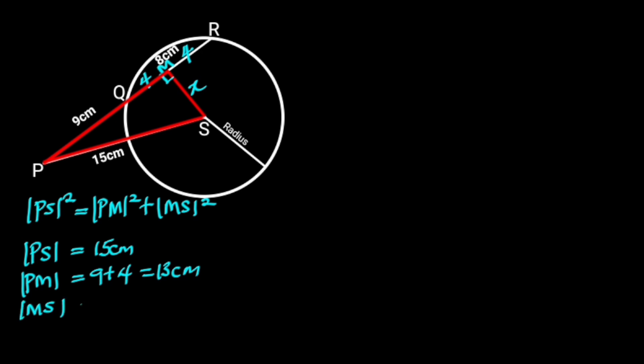From Pythagoras theorem, PS squared is equal to PM squared plus MS squared. PS is 15 cm. PM is 9 plus 4, which is equal to 13 cm. And MS is X.